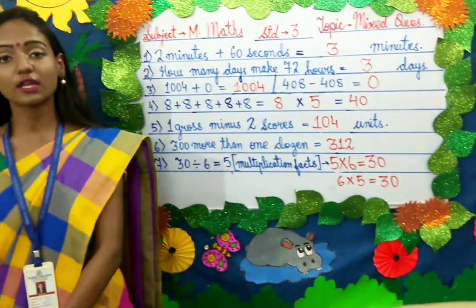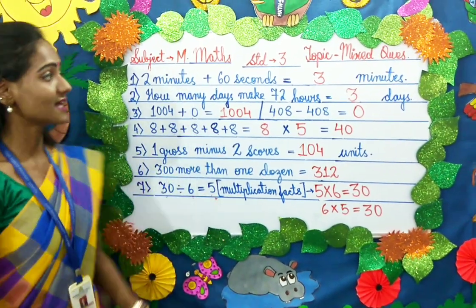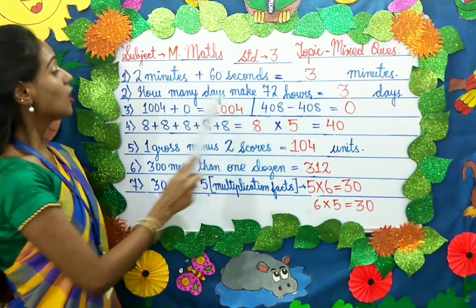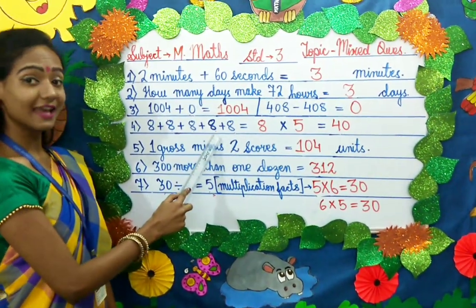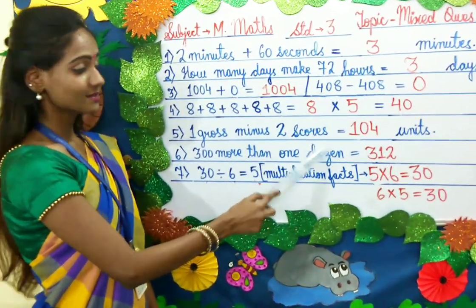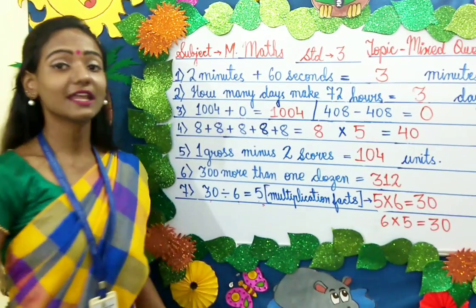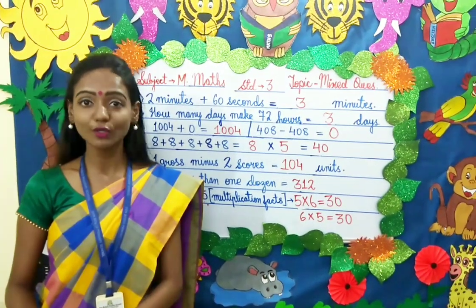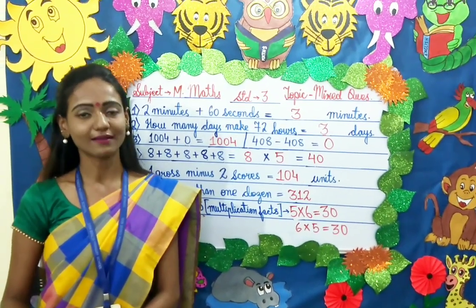Let us quickly recap what we studied today: time — minutes, seconds and hours; properties of addition and subtraction; repeated addition; gross, scores, dozen; and multiplication facts. Worksheets related to these topics will be uploaded on your school website. Kindly go through them and study well. Thank you children.